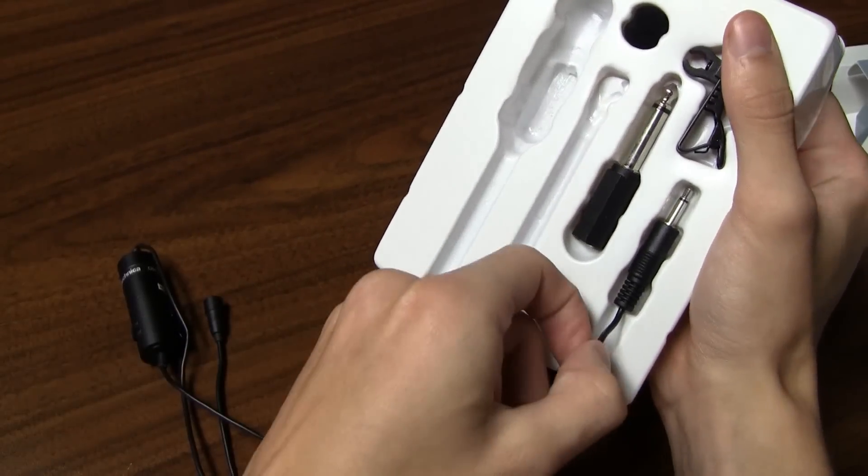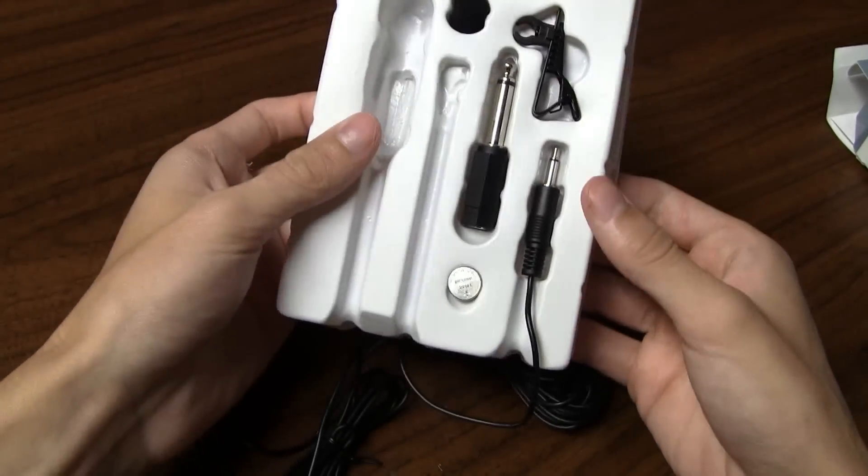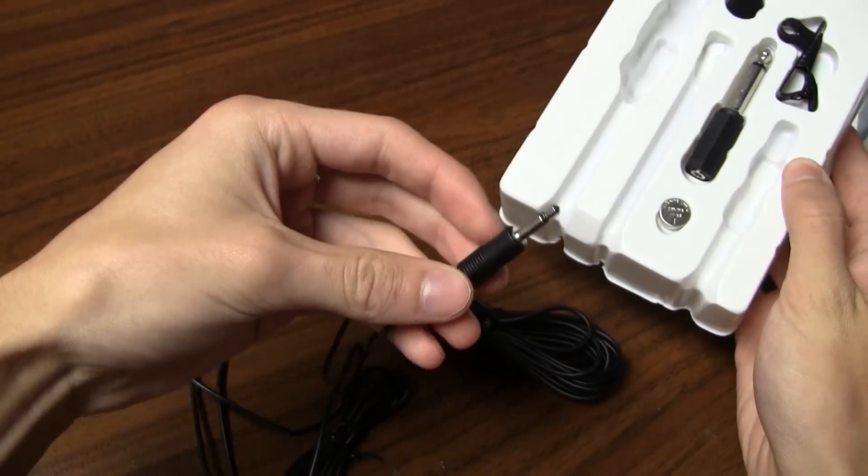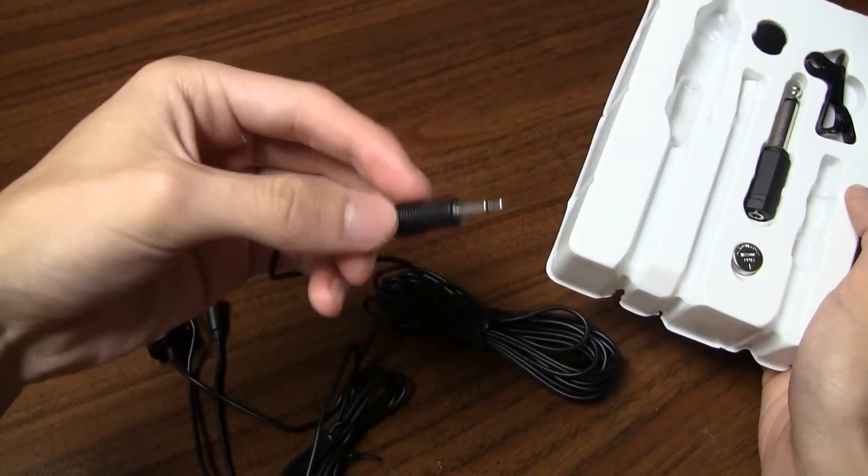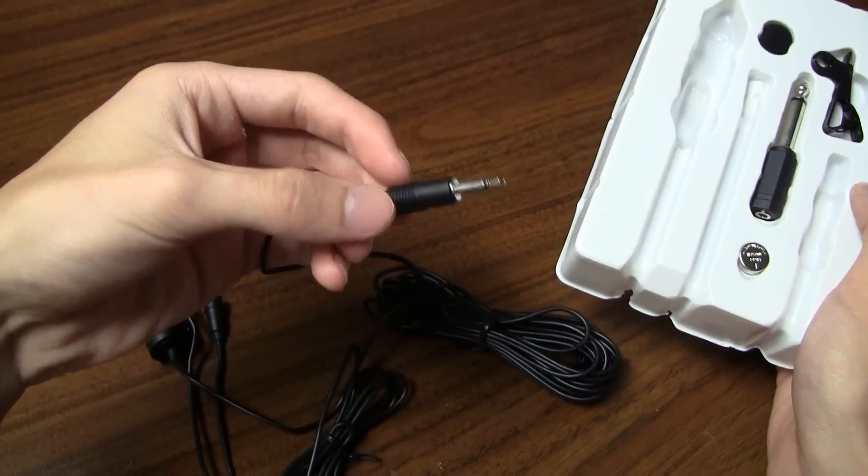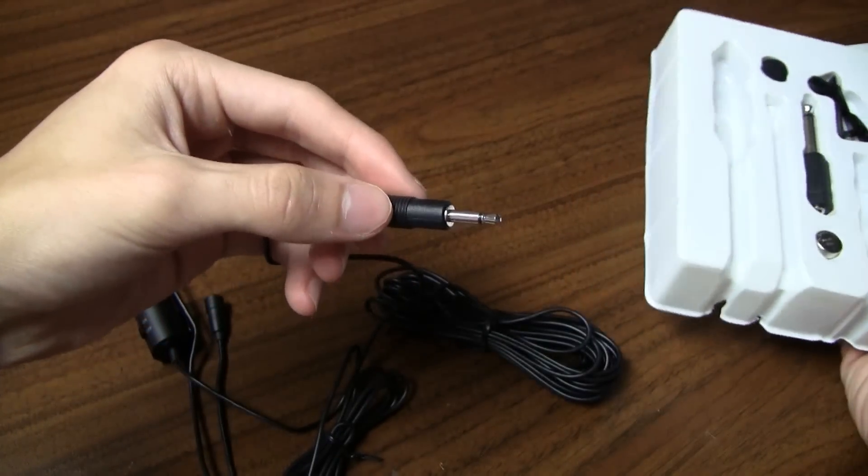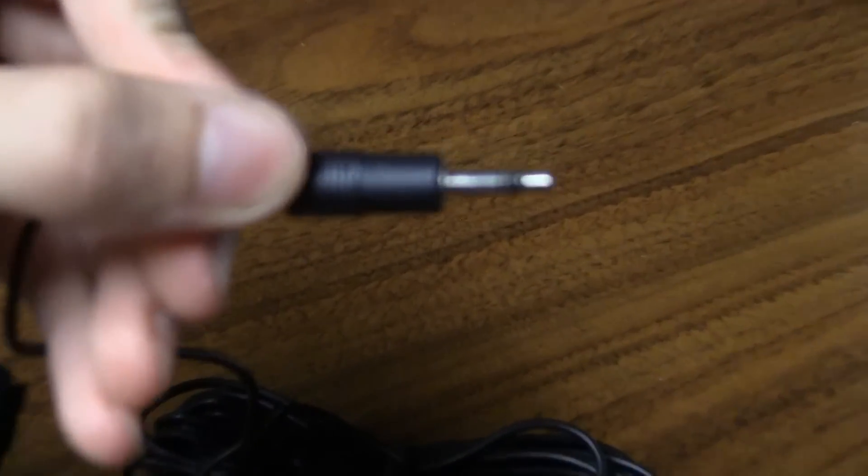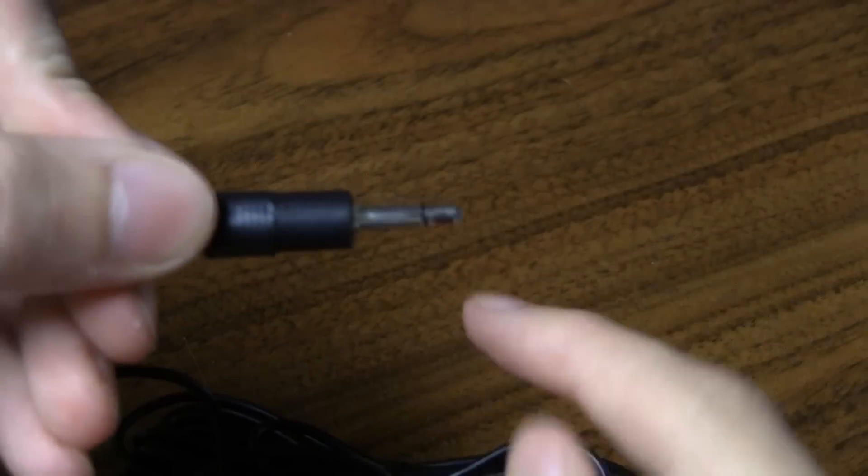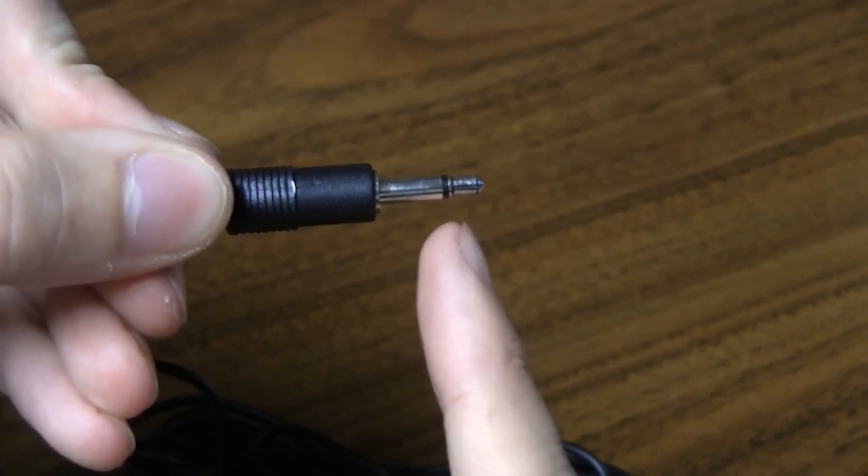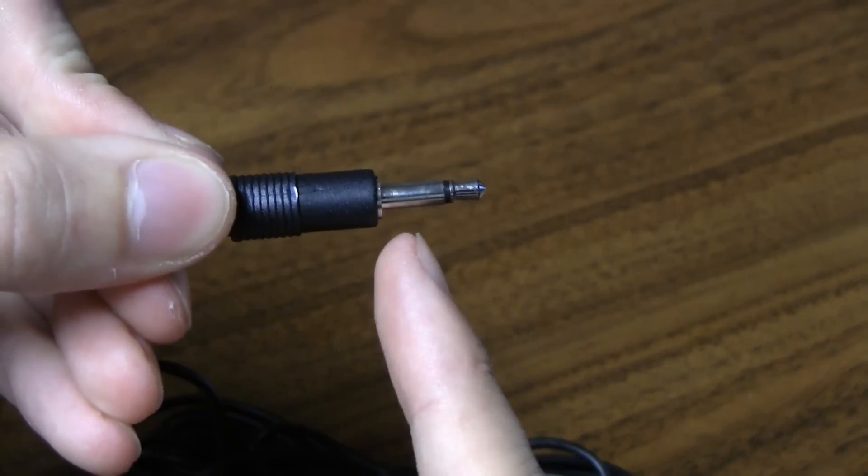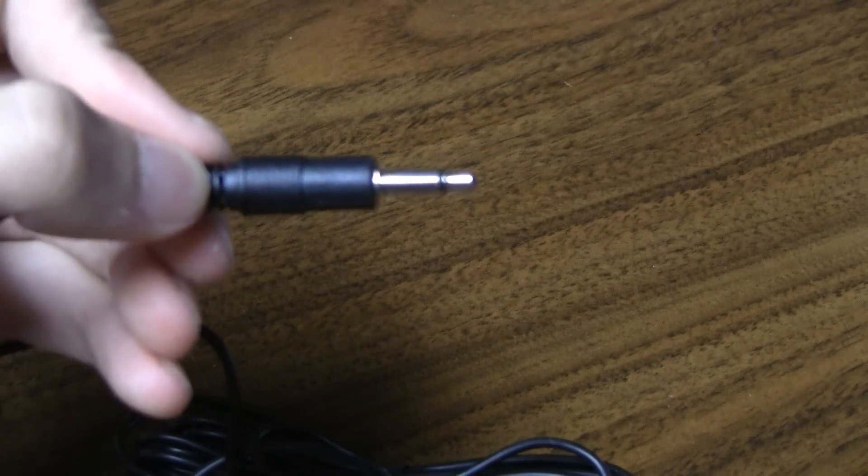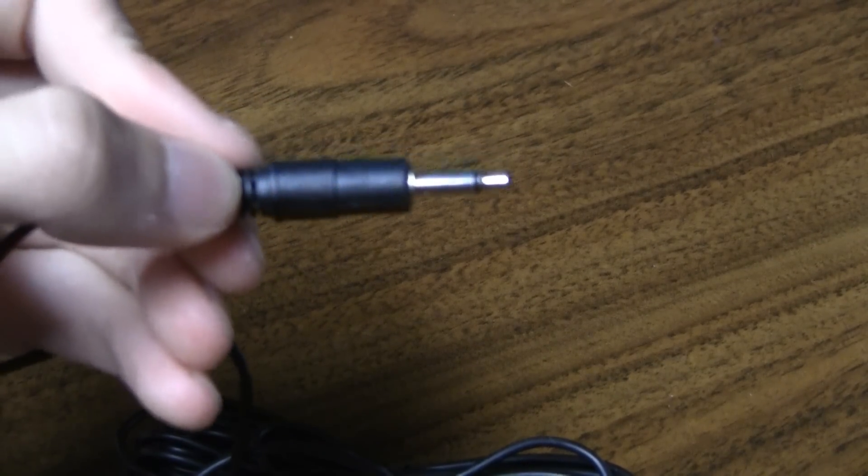So here is the 3.5 millimeter jack input for the microphone itself. Now this microphone is mono. It records in mono, not stereo. So you may need to buy an adapter for the jack in case you want it to record in stereo. So if I zoom in here, you'll see that it has a black strip. If it has one black strip, that means it's mono. If it has two, it's stereo. It doesn't really necessarily mean you need to buy an adapter. You can always edit the audio in post production.